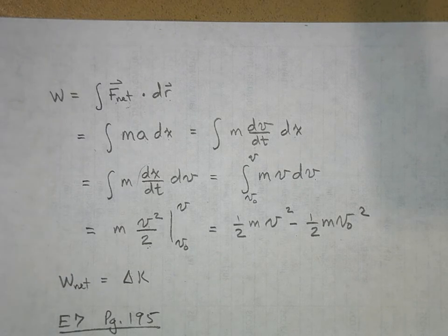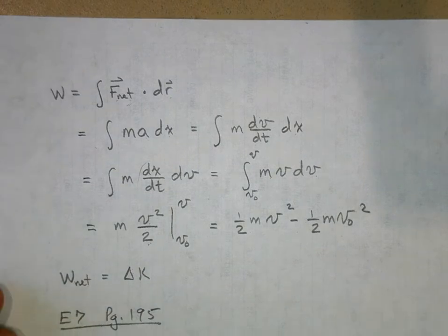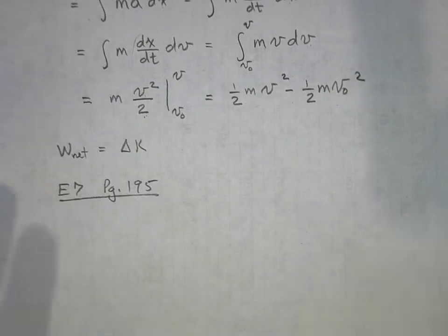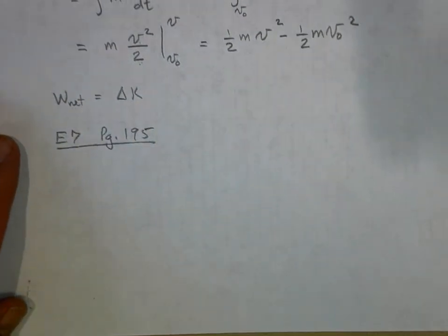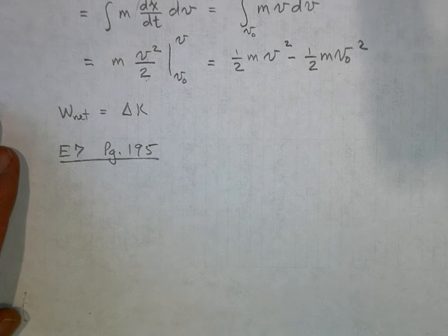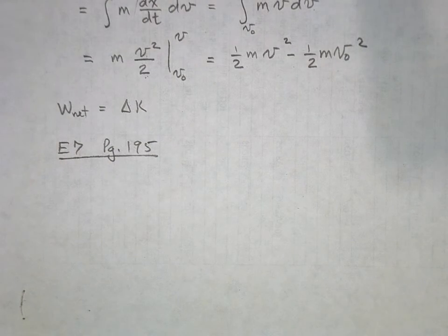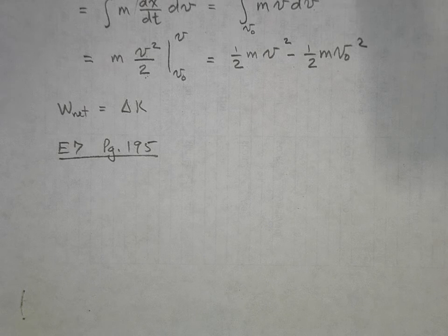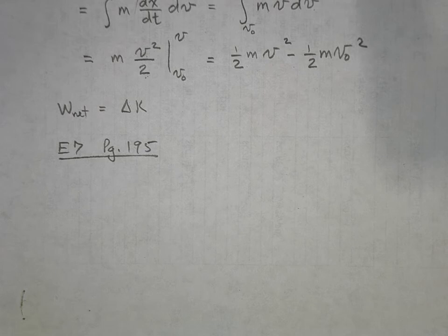Okay, I hope that problem went well for you. Let's go ahead and do that example together. So this is example 7 on page 195, and I'm going to read the example to you. It says: a 6 kilogram block initially at rest is pulled to the right along a horizontal frictionless surface by a constant horizontal force of 12 newtons. Find the speed of the block after it is moved 3 meters.